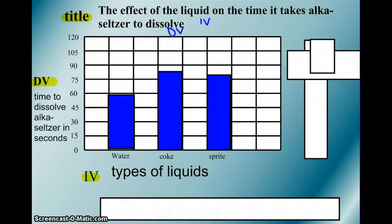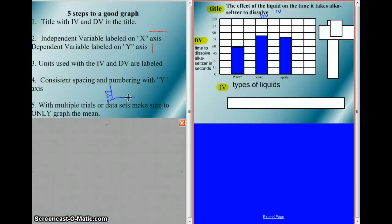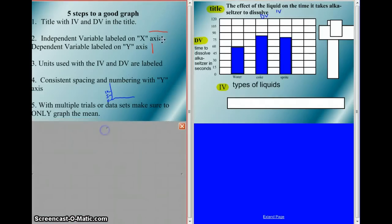Let's check and make sure that we have everything. Do you have a title with independent and dependent variable in the title? Yes, you do. They're both there. Independent variable labeled on x-axis. Yes. Down here. Dependent variable labeled on y-axis. Yep. Got it right here.